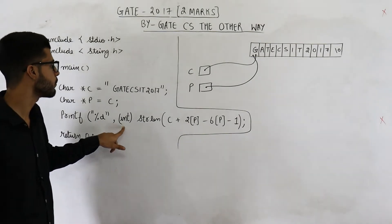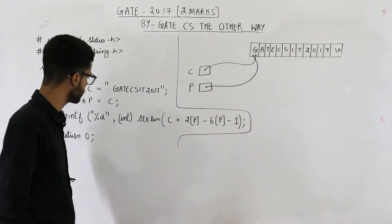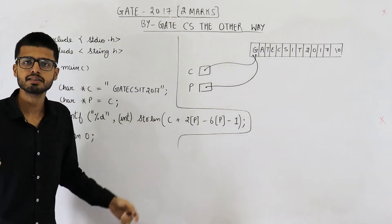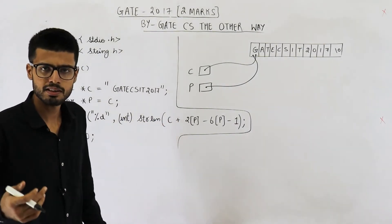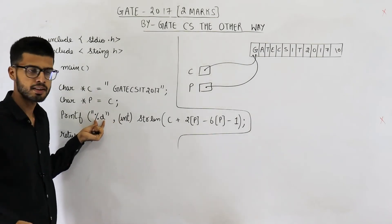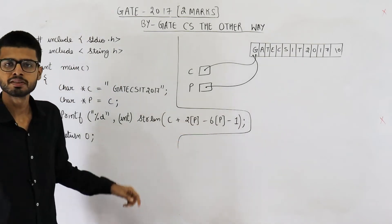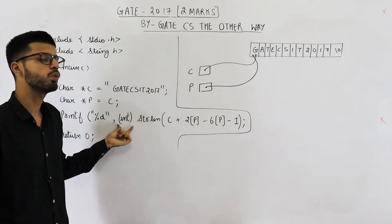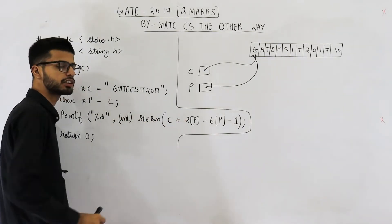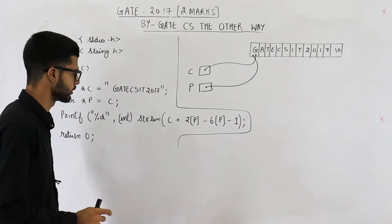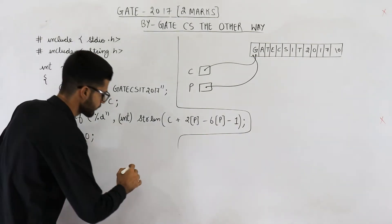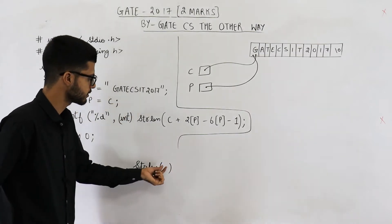The next line is printf percent D comma int string length of this. Now see, here we are using the function string length or strlen. This function returns size_t. It returns a variable that is of size_t or it is an unsigned integer. That is the reason we are first converting it into an integer because we are using percent D here. Whenever you are using percent D, the value that you are expected to write here must be some integer. That is the reason we have converted its return type to integer.